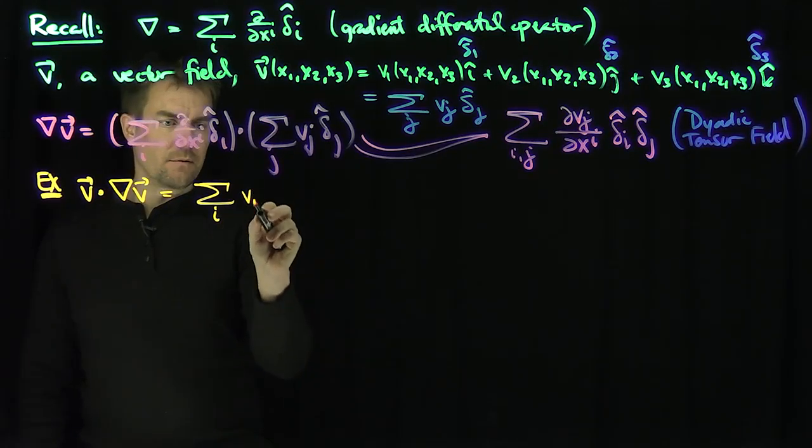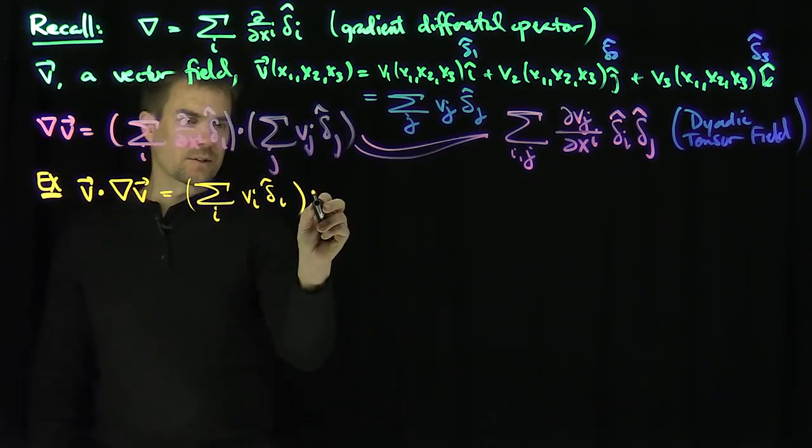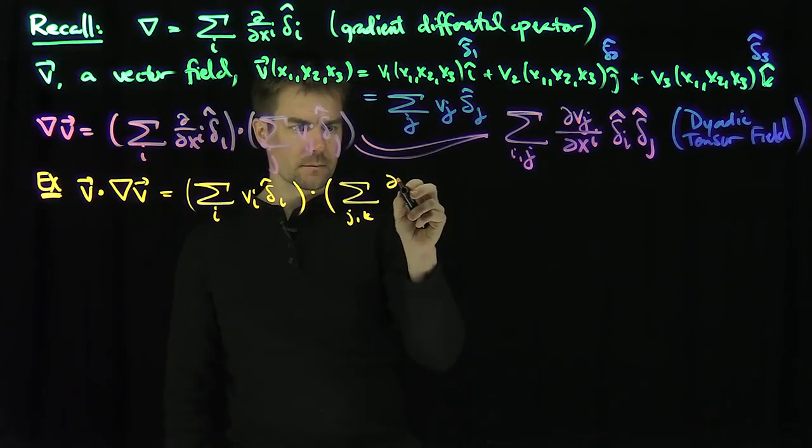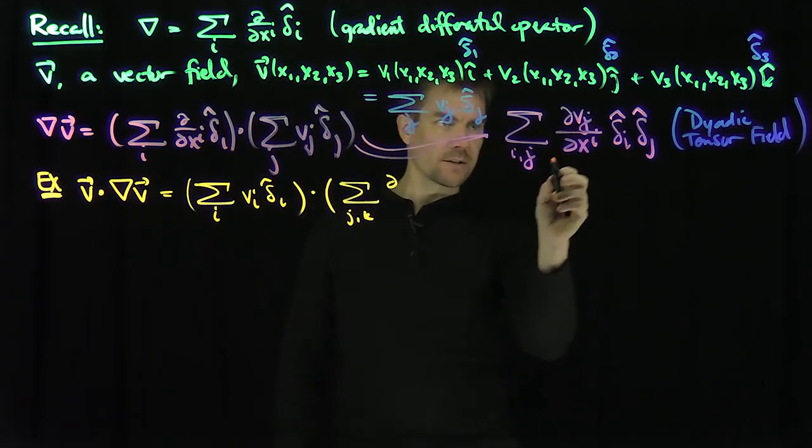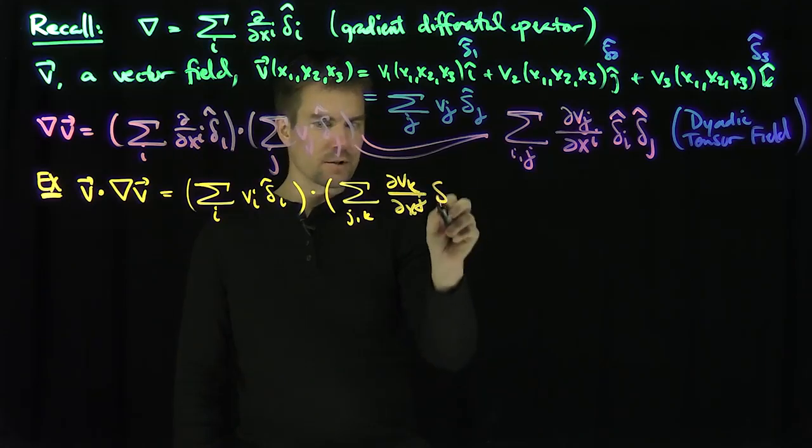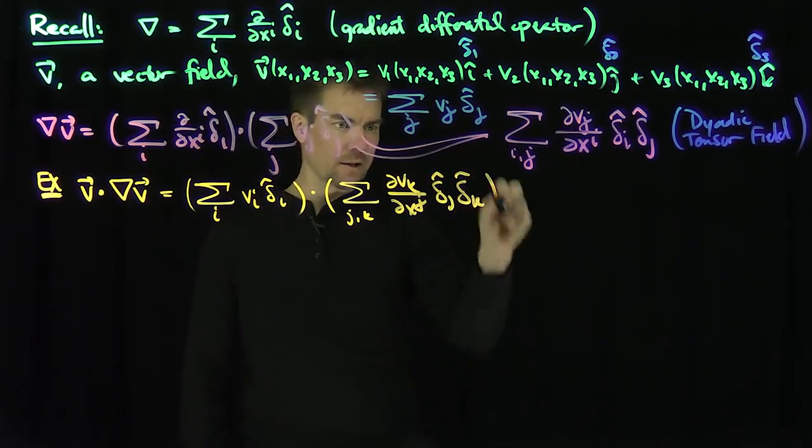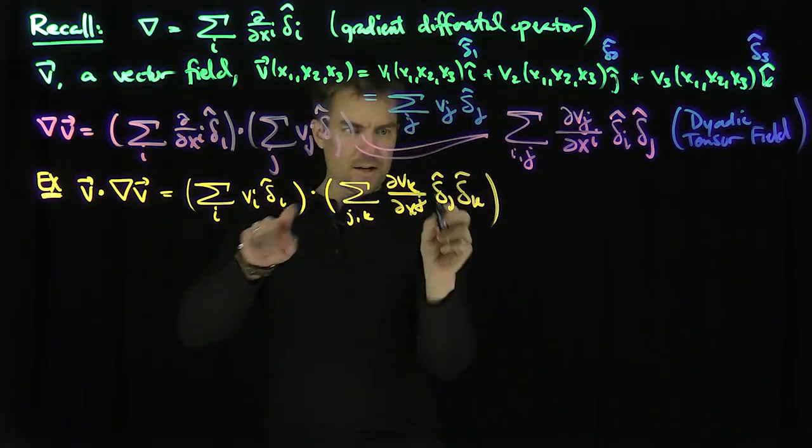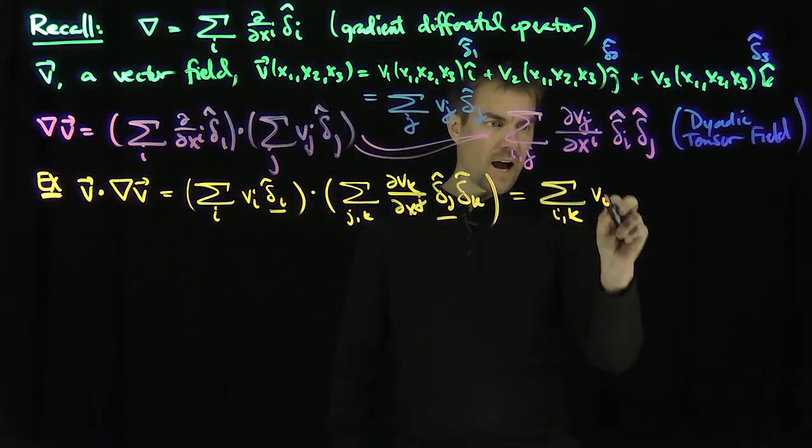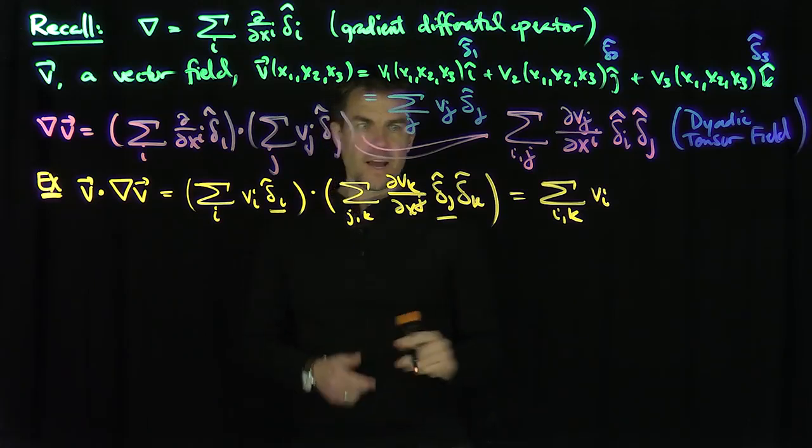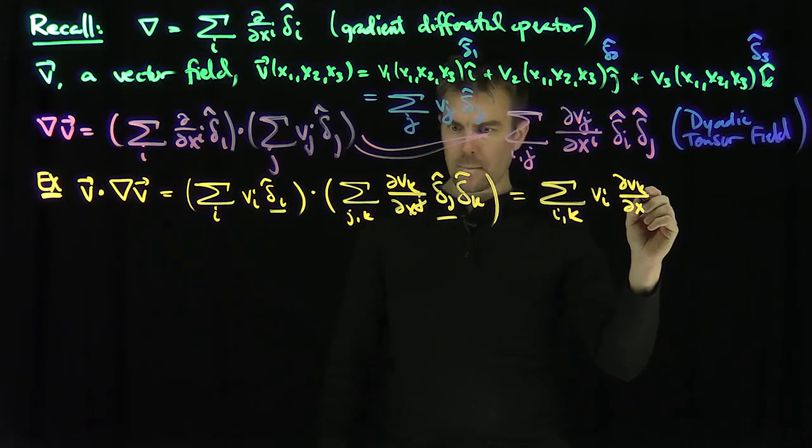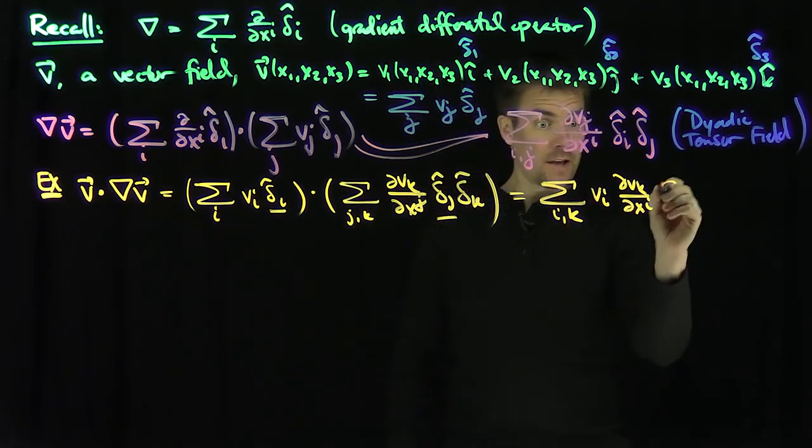It's going to be the sum over i of vi delta i hat single dot with the sum over j and k of partial Vk partial xj delta j hat delta k hat. This becomes a delta ij, so it's the sum over i and k of vi partial Vk partial xi in the direction of delta k hat.